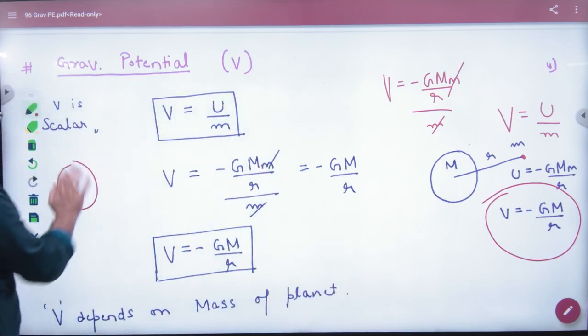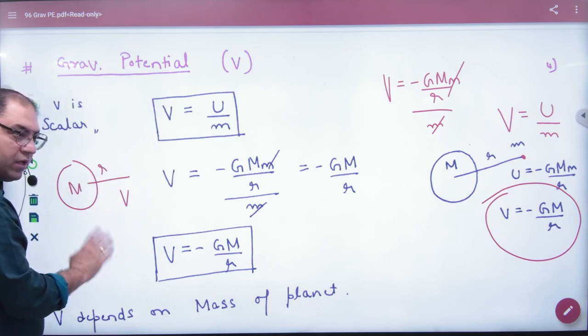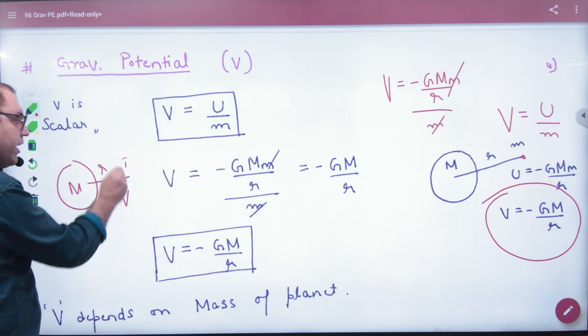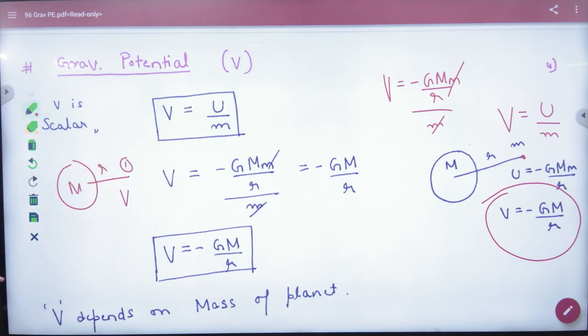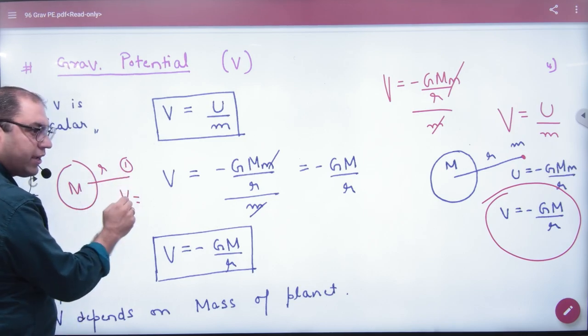To ek shortcut banalo, jahan per aapko potential nikalna hai, maan lo, small a distance pe potential nikalna hai, wahan pe mass expect hi na karo, de na de, koi fark ni padhta, imagine karlo, yahan per, unit mass hai, baat hi khatam, chahiye nahi is ka mass, cancel di tohon hai.